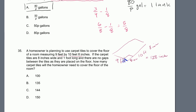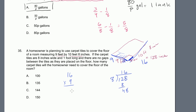The tiles are 1 foot on one side and 8 inches on the other. Along the 9-foot dimension, we fit 9 tiles. Along the 128-inch dimension, 128 ÷ 8 = 16 tiles. So total tiles needed = 16 × 9 = 144 tiles. That's choice C.